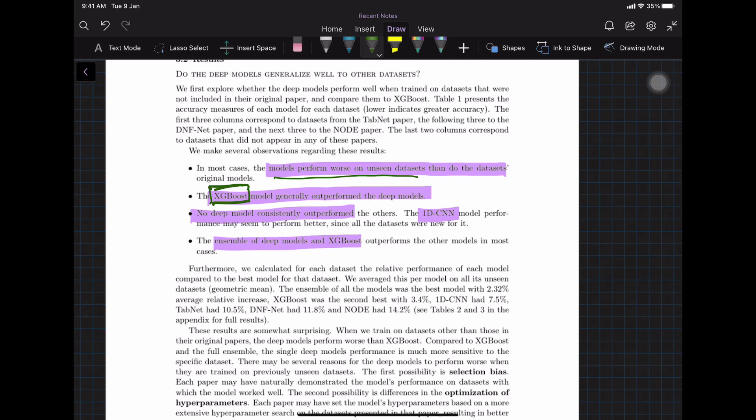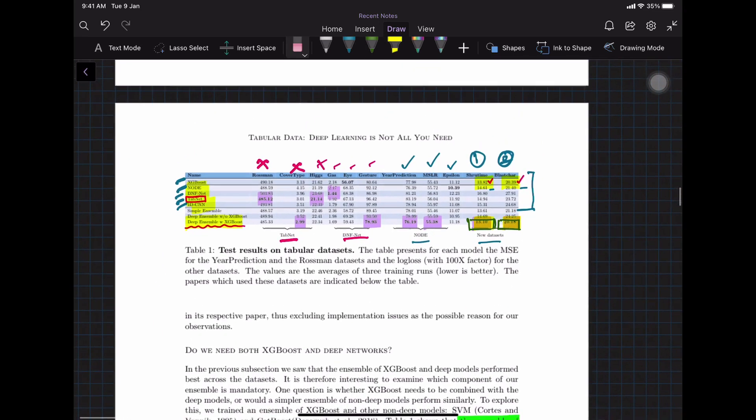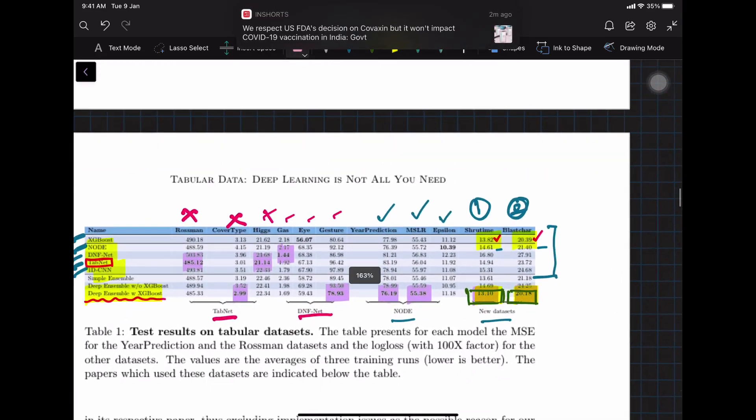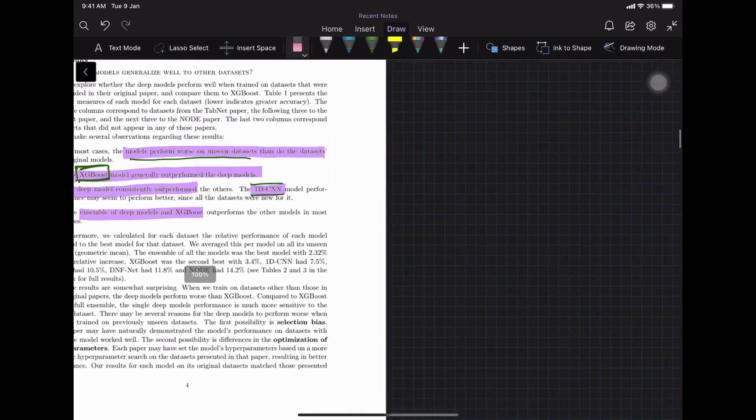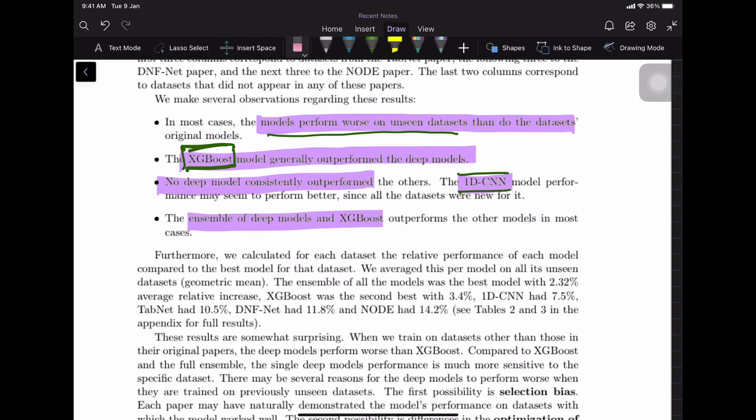And then no single deep learning model consistently outperforms, except probably 1D CNN, which seems to perform on other datasets, like even datasets that are not part of their—if you see 1D CNN when you have other datasets you would see 1D CNN doing better.